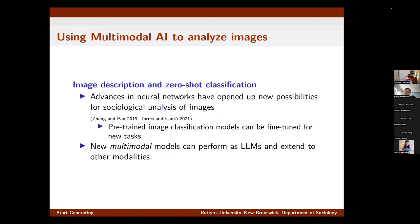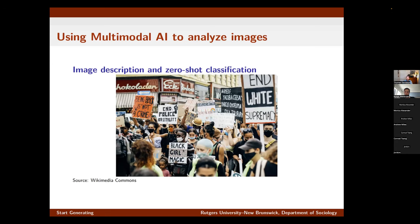Turning to image analysis: in tandem with advances in our ability to analyze text, we've seen breakthroughs over the last decade or so enabled by convolutional neural networks in the way we can analyze images. There have been some really interesting papers looking at how we can take a pre-trained model and fine-tune it to a particular task — for example, this paper by Han Zhang and Jennifer Pan looks at how we can take a model and use it to detect protest imagery. New advances in generative AI, particularly multimodal models, allow us to have single models like GPT-4 that can both act as LLMs and extend to other modalities. In the paper, I wanted to look at how we can extend what Zhang and Pan did to analyze protest imagery.